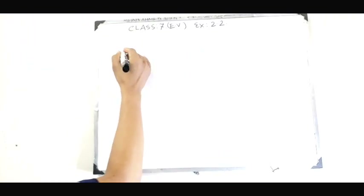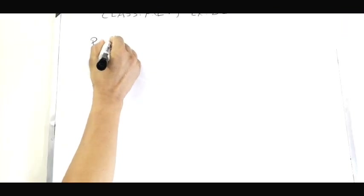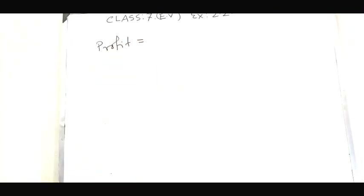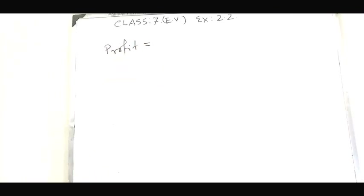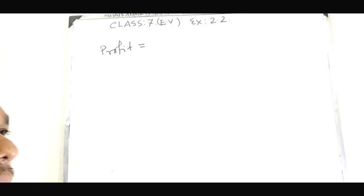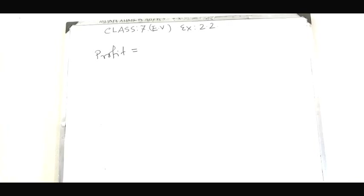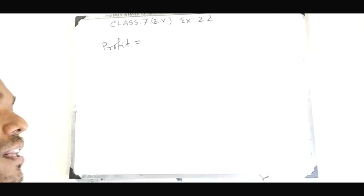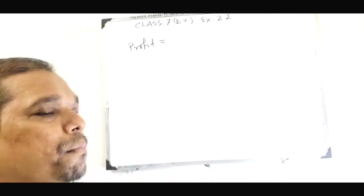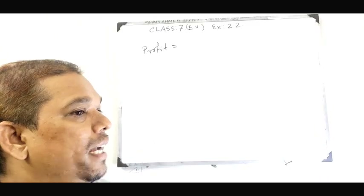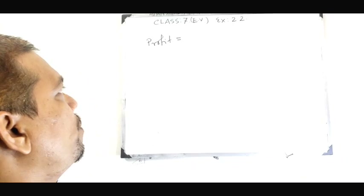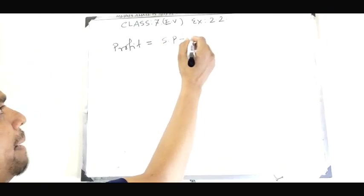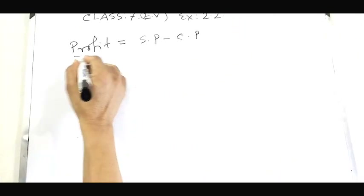At first, Profit. Profit means when the selling price is greater than the cost price — that is, when the selling price is high and the cost price is low.